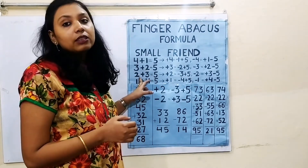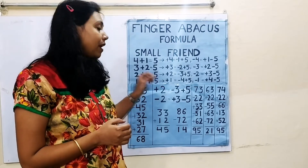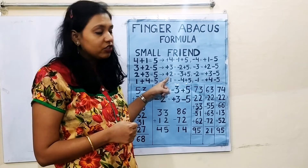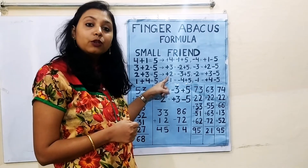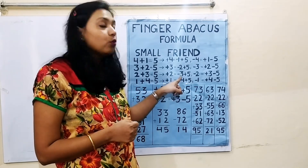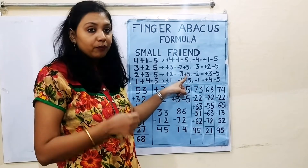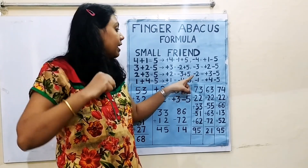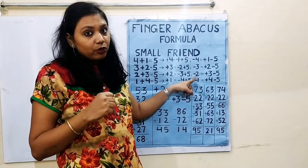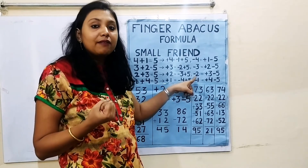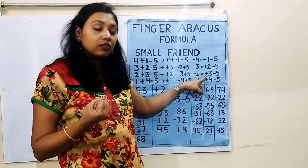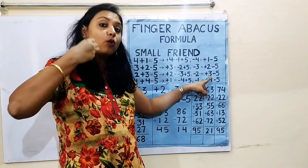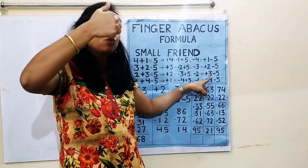Let us discuss the third point: 2 plus 3 equal to 5. Friends, if you don't have finger level for calculation and you want to add 2, then you can subtract 3 and add 5. You have to close 3 fingers and open the thumb. If you want to subtract 2 and don't have finger level for that, then you can add 3 and subtract 5 — open 3 fingers and close the thumb.